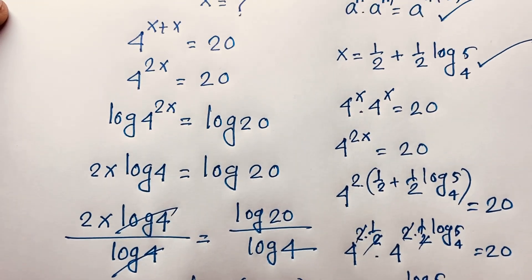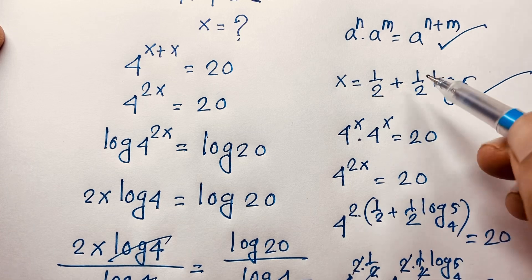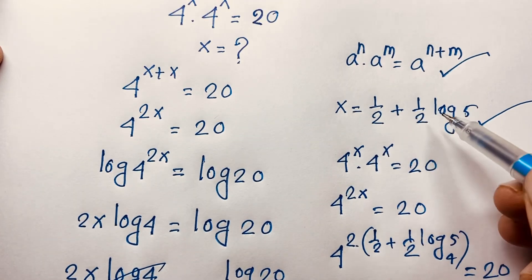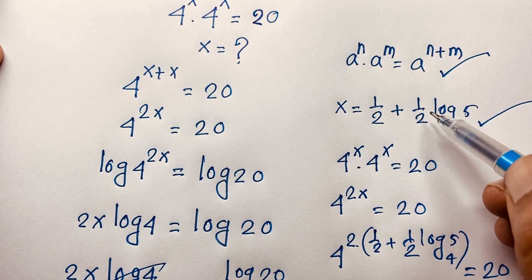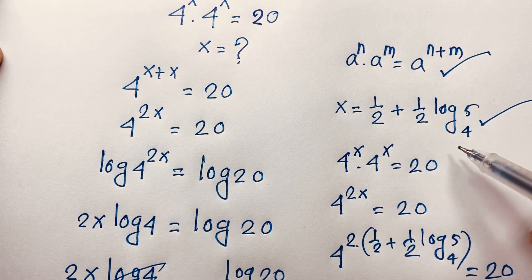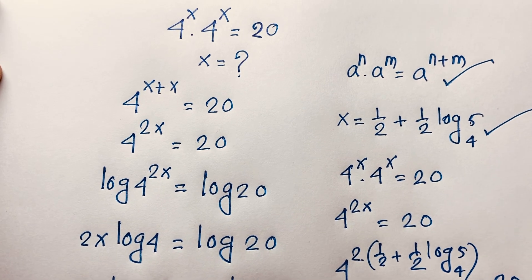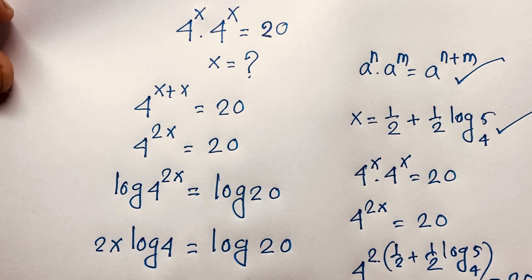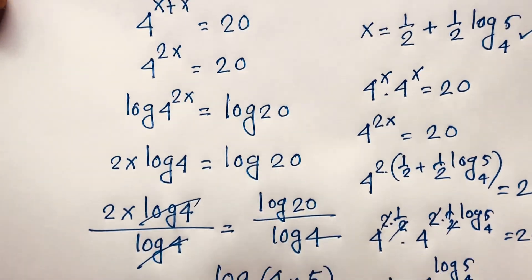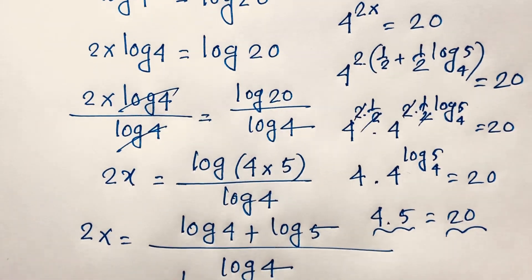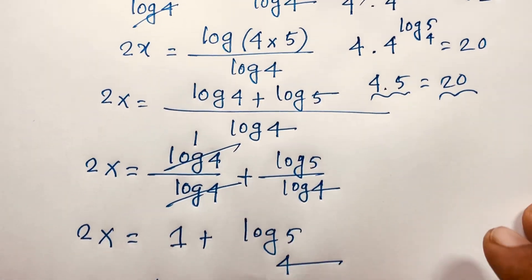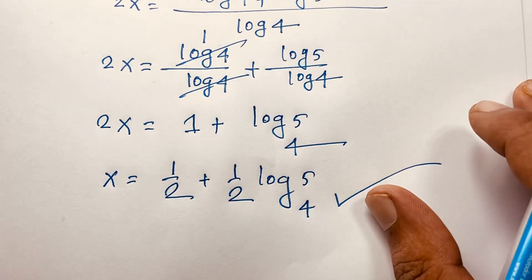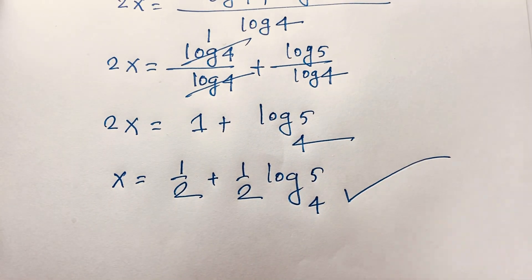So our final answer is x is equal to 1 over 2 plus 1 over 2 log 5 base 4. This is the value of x. Thank you all. If you enjoyed this video, please subscribe to my channel for other interesting videos. Goodbye, take care.